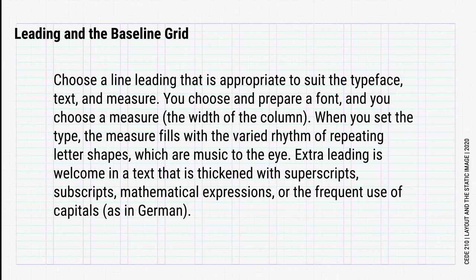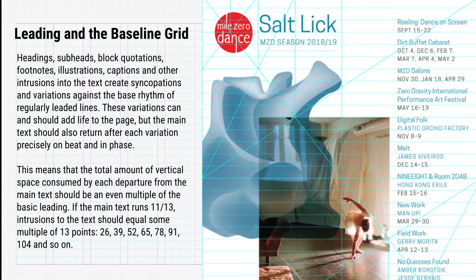Extra leading is welcome in a text that is thickened with superscripts, subscripts, mathematical expressions, or the frequent use of capitals, as in German. Headings, subheads, block quotations, footnotes, illustrations, captions, and other intrusions into text create syncopations and variations against the base rhythm of regular leaded lines. These variations can and should add life to the page, but the main text should also return after each variation precisely on beat and in phase. This means that the total amount of vertical space consumed by each departure from the main text should be an even multiple of the basic leading. As the main text runs 11 over 13, intrusions to the text should equal some multiple of 13 points — say 26, 39, 52, 65, 78, 91, 104, and so on.